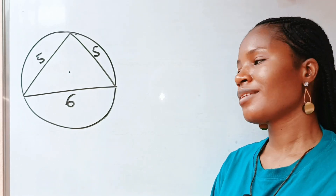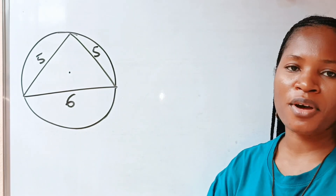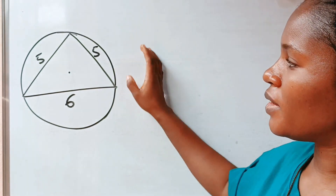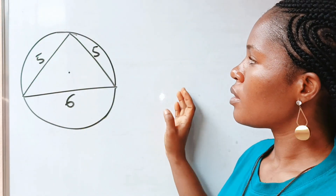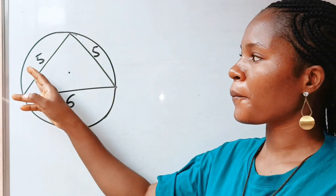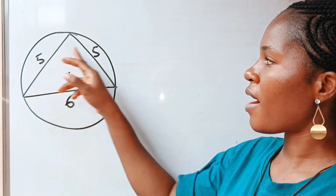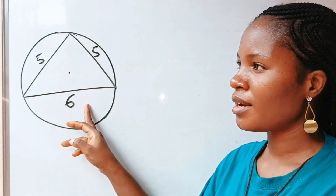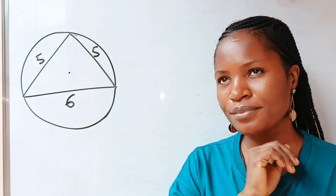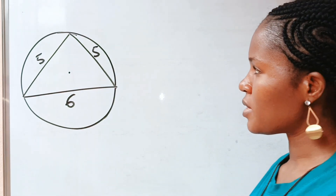Welcome to another challenging geometry math question. Today we are asked to find the area of a circle. Inside it is inscribed a triangle of sides five, five, and six. I'm going to solve this using three methods. Let's go to the first method.